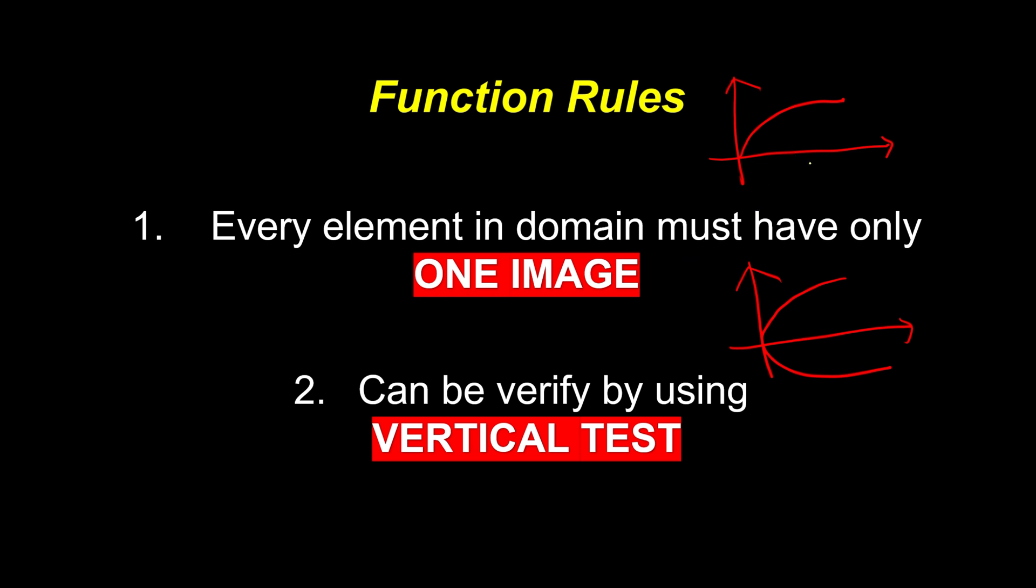So how do we carry out the vertical test? We just cut through in a vertical way. If we cut through one point, then we say that, hey, you are fine, you are a function. Meanwhile, if I cut through and I find out that you eventually have two intersections, then you are in a deep trouble and I will say that, no, you are not certified as a function.